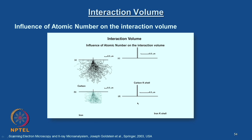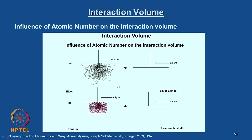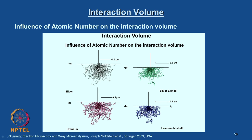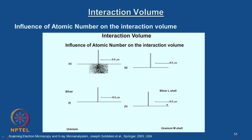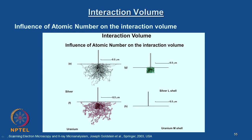Here are some more examples of atomic number effects on interaction volume — you can look at silver metal and silver L-shell, uranium metal and uranium M-shell, and so on. So you get some idea about this interaction volume even though you start with a very small probe diameter.